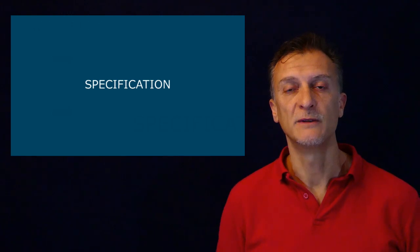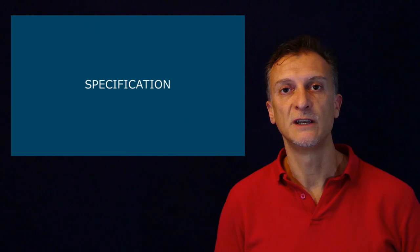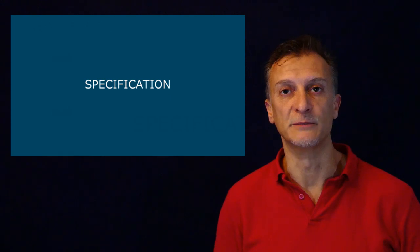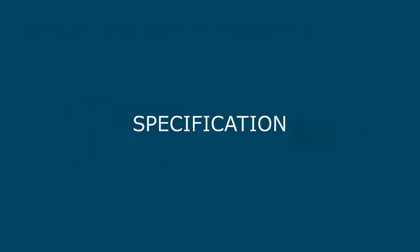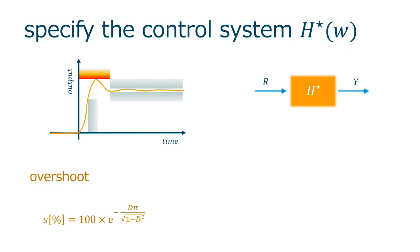As you know by now, before starting any design process, we need to specify the control goals in an appropriate format. In the current case, we need to specify our goals in the frequency domain terms. In this case, the specification of the control system, the so-called H star, goes through the process of selecting the damping factor or overshoot by means of establishing an adequate phase margin.